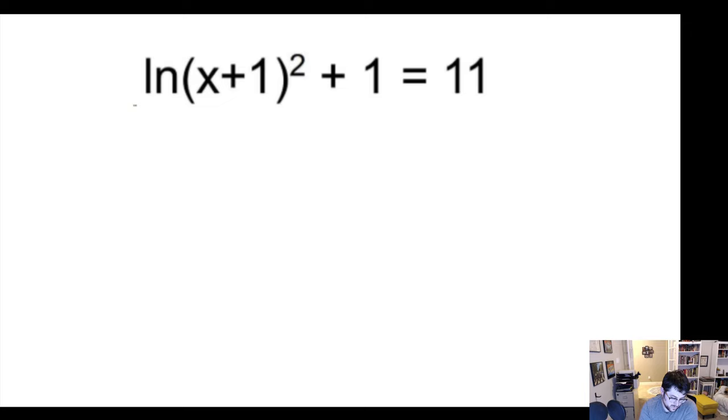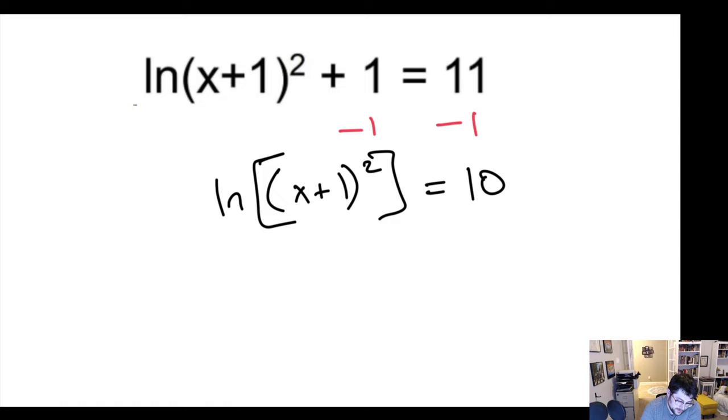Well, what about this one? Well, let's deal with the stuff outside of the natural log first. So we're going to subtract 1 first off. We'd have natural log of x plus 1 squared. To be clear, all this is inside the natural log equals 10. Then we could raise both sides to the power of e. And we would be left with x plus 1 squared equals e to the 10th.